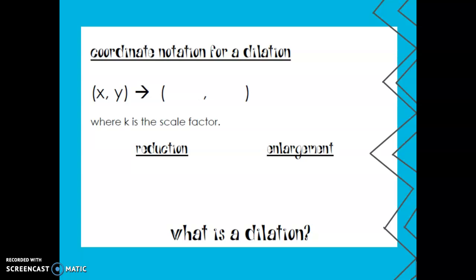Coordinate notation, also known as algebraic representation, for a dilation is as follows: (x, y) to (kx, ky), where your point started at (x, y) and ends at (kx, ky), with k representing the scale factor. If k is smaller than 1, it is a reduction. If k is bigger than 1, it is an enlargement.